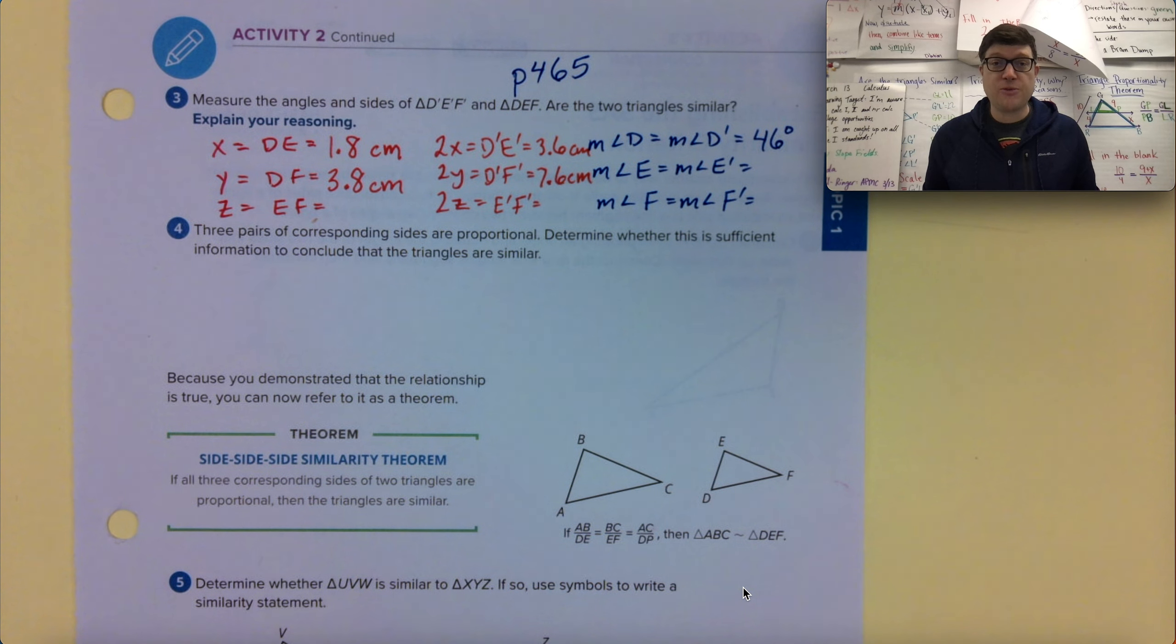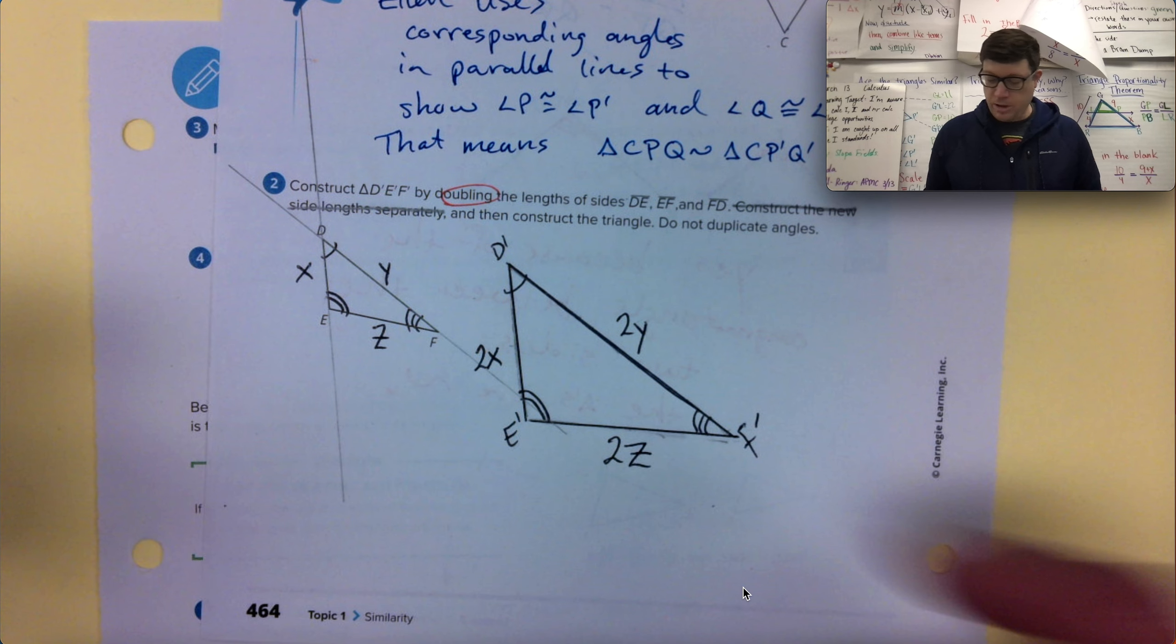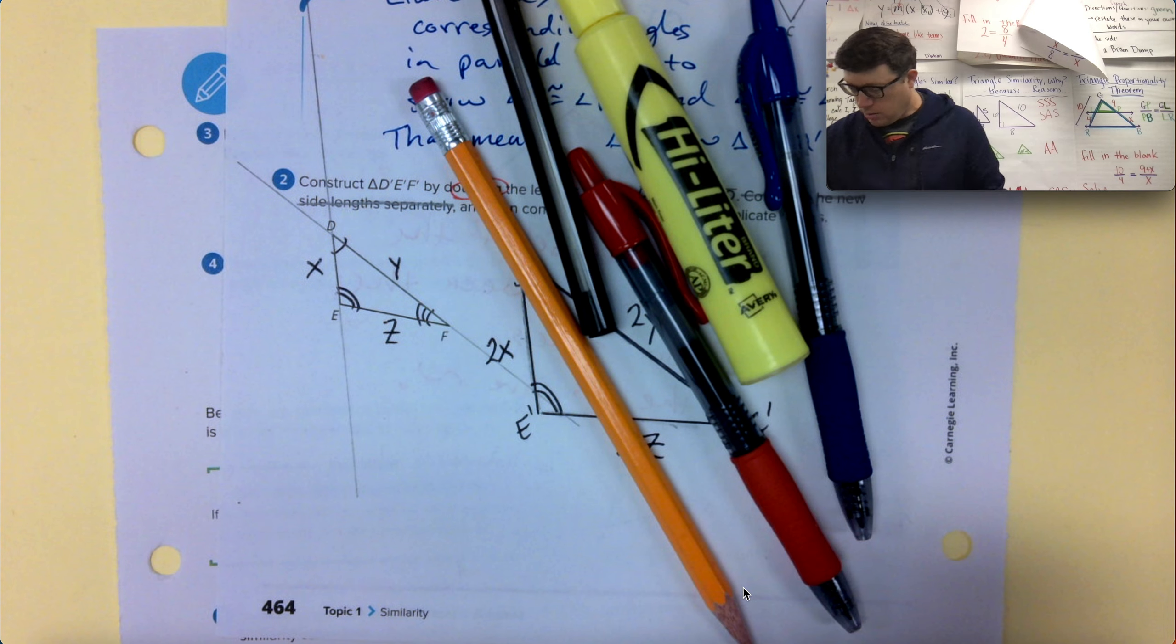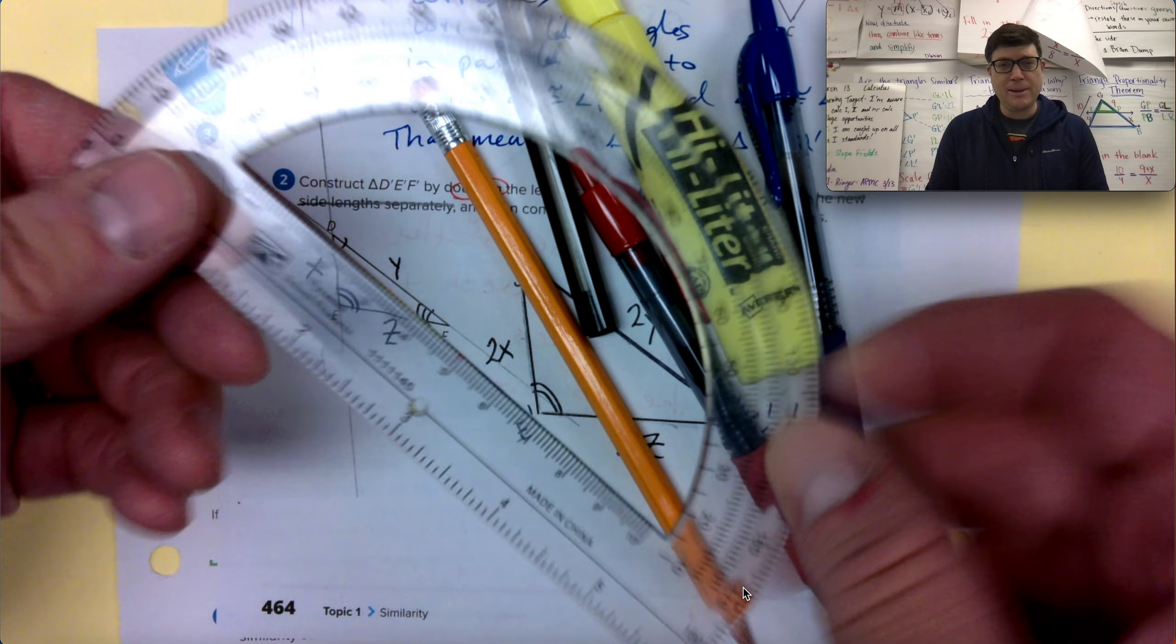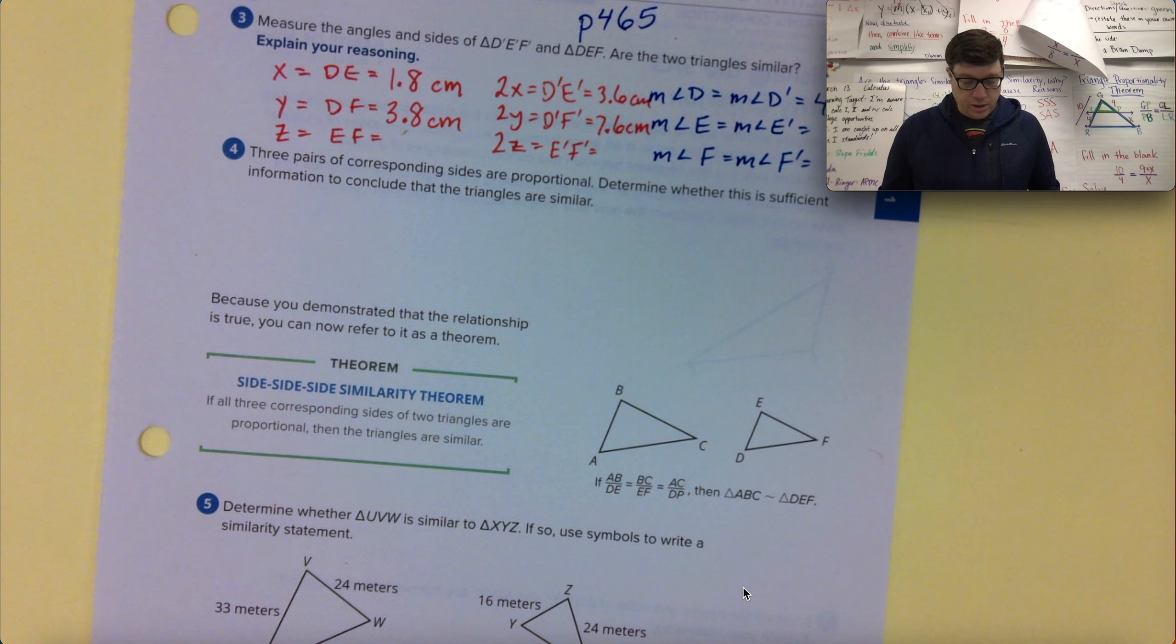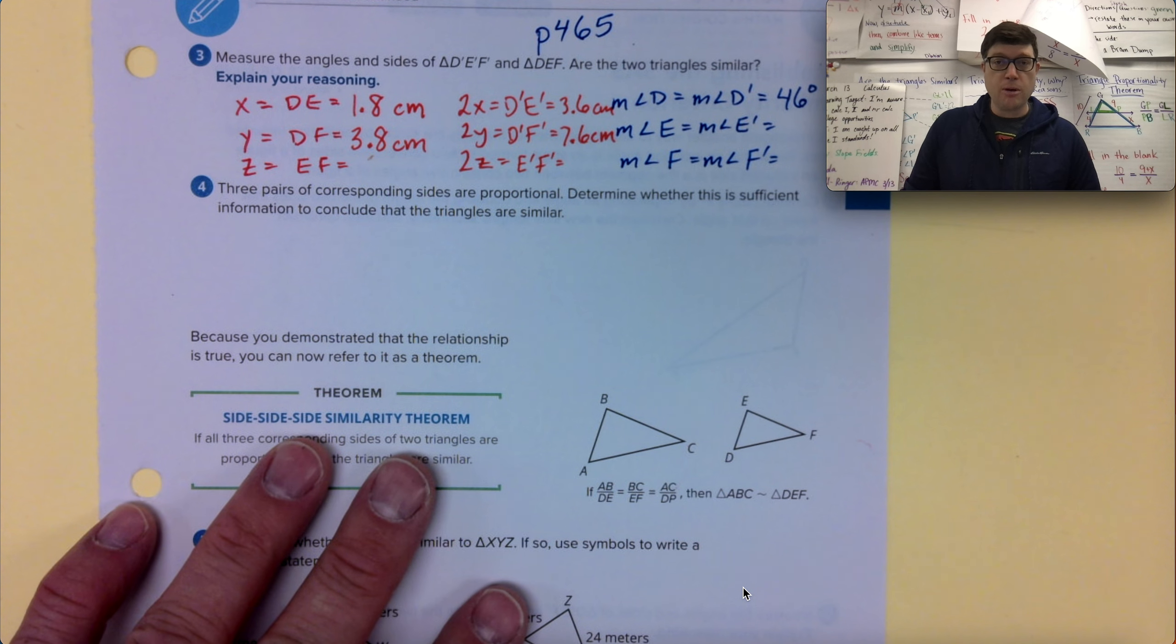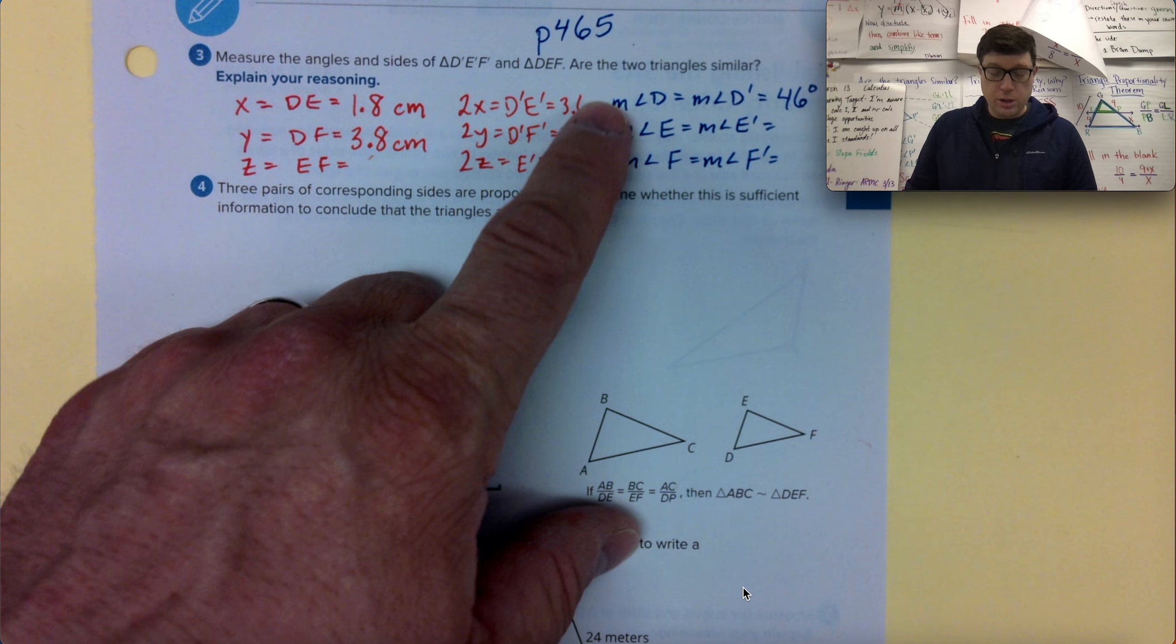In order to answer the questions on page 465, we actually need to go back and look at the triangles that you created on the previous page. And so have some stuff to write with, some highlighters. And you're going to need a protractor. Measure the angles and sides of triangle D'E'F' and triangle DEF. Are the two triangles similar? And explain your reasoning.